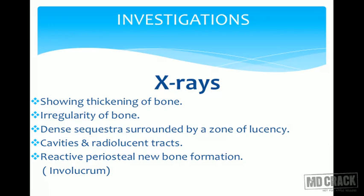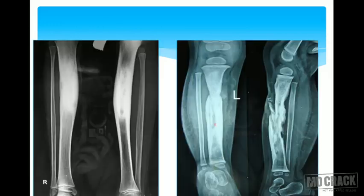X-rays are very characteristic of chronic osteomyelitis. They show thickening and irregularity of the whole bone with sclerosis. The sequestrum appears very dense — a radio-opaque area surrounded by a zone of lucency. There are also radiolucent cavities and sinus tracts tracking through the soft tissue and skin. These cavities are known as cloacae, and reactive periosteal new bone formation is seen.